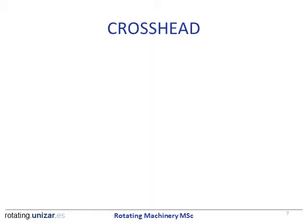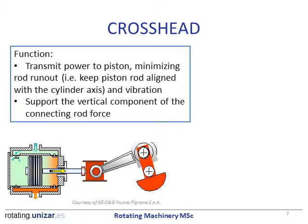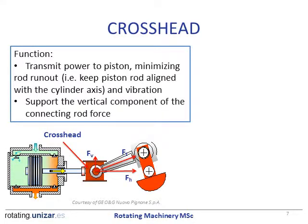On this module we will have the same structure as on the previous one, so for each component we will first discuss the function. In the case of the crosshead we have two different functions. The first is transmitting power, but also minimizing the rod run out and the vibration — keeping the piston rod aligned with the cylinder axis at all times. The force on the connecting rod can be split into two components: the horizontal force, taken by the piston rod, and the vertical force, which must be supported by the crosshead.